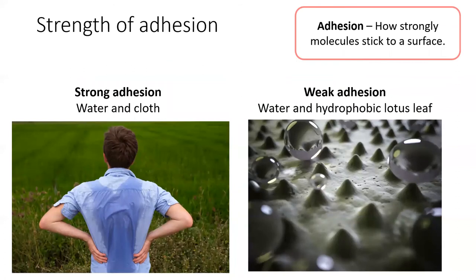The strength of adhesion will change as the surface changes. For example, water has high adhesion to molecules in most fabrics, which explains why fabric tends to soak up water when it gets wet. Highly hydrophobic surfaces, like a lotus leaf or a freshly stained deck, have weak adhesive forces with water. So water will tend to bead up into a spherical shape to minimize contact with the surface and maximize water-water interactions.